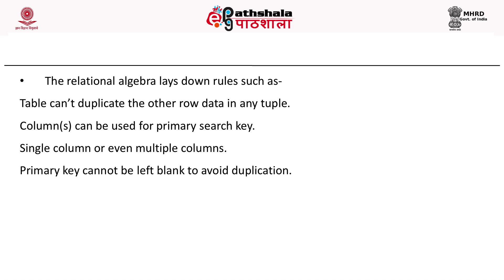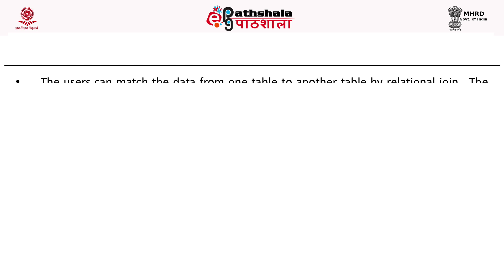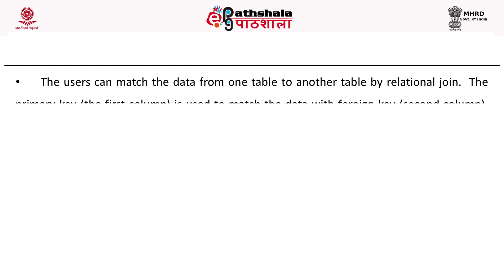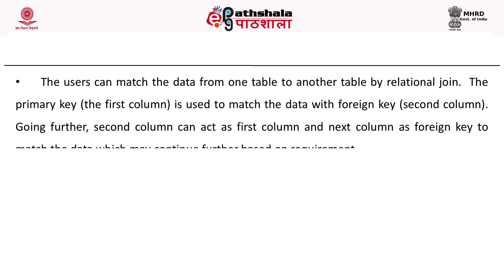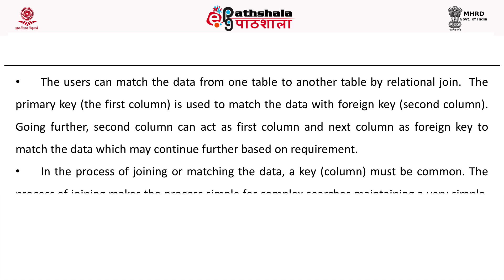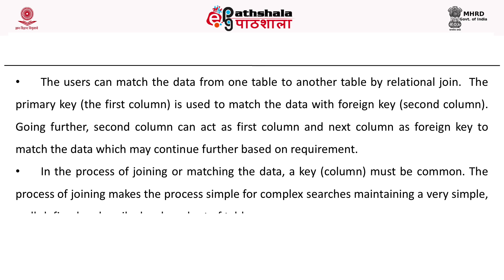The second rule is that columns can be used as a primary search key — either a single column or multiple columns. The last rule is that the primary key cannot be left blank to avoid any duplication. Users can match data from one table to another by relational join. The primary key (first column) is used to match data with the foreign key (second column). The second column can then act as the first column and the next column as foreign key, continuing further based on requirement. A key column must be common in the joining process, making complex searches simple while maintaining well-defined, easily developed tables.